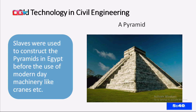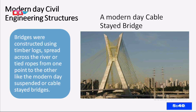When we talk about early civil engineering technologies, we have the Egyptian pyramids. In those days, slaves were used to construct the pyramids before the use of modern machinery like cranes. Then we have early bridges, which were constructed using timber logs spread across rivers, with ropes tied just to cross from one point to the other.